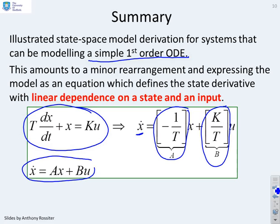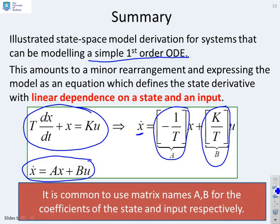Minus 1 over T is your matrix A and K over T is your matrix B. So you end up with a state-space model x dot equals Ax plus Bu.